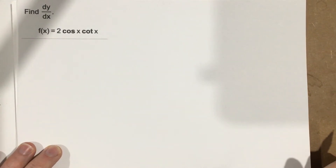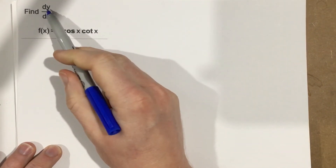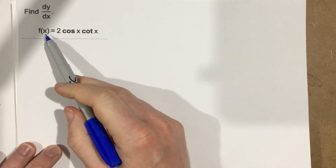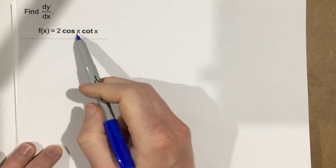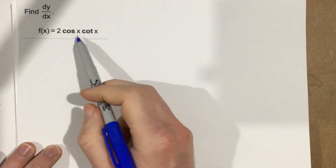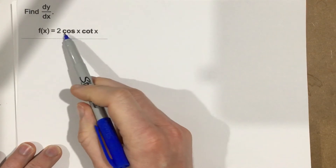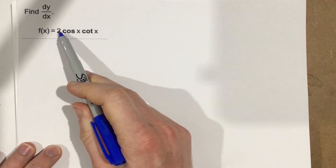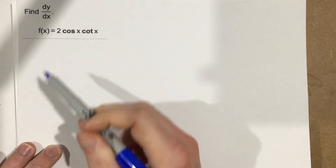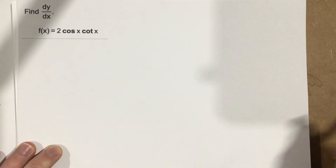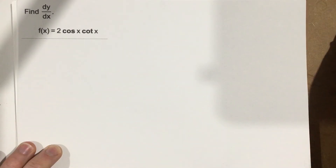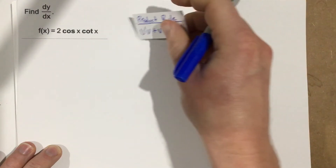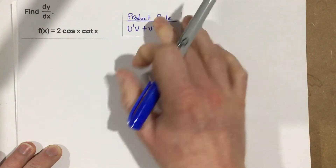This is problem number four for section 3.5. This problem says find the derivative of y with respect to x for the function 2 cosine x cotangent x. You'll notice we have multiplication between these, but the 2 is a constant, so we're just going to include this constant with one of our functions for the product rule. We're going to have to use the product rule here.